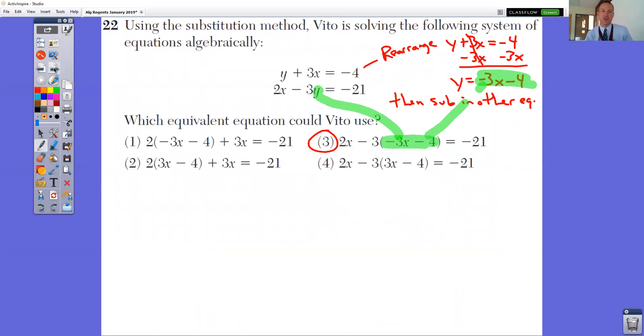In question number 22, using the substitution method, Vito is solving the following system of equations algebraically. The substitution method means that you need to sub in. The first thing that we need to do is rearrange this one for Y equals. So trying to get the Y all by itself, we need to do minus 3X and minus 3X to get the Y all by itself. Then we need to sub it into the other equation. Now that we know what Y is, we need to sub it in for Y. So subbing it in, notice that this is what our Y value is. We need to sub it into there.